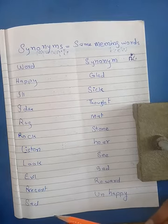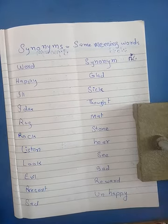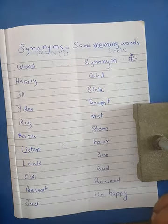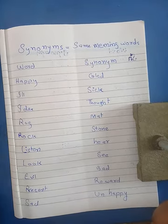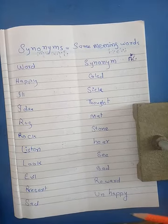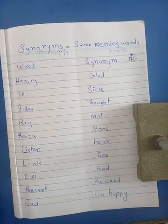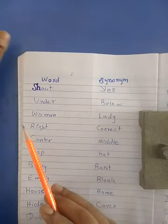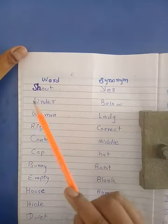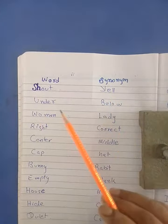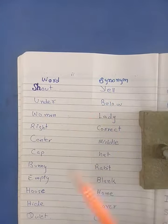Present — synonym is reward، مطلب تحفہ یا کوئی انعام دینا۔ Sad means unhappy — synonym of sad is unhappy، مطلب اداس۔ There is the word shout — synonym: yell، مطلب چلانا۔